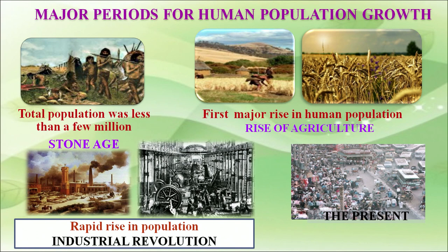Starting from the Stone Age, the total population was less than a few million. When agriculture began, there was the first major rise in population. Population rose rapidly again when the industrial revolution started. The figure shows the present situation of population growth.